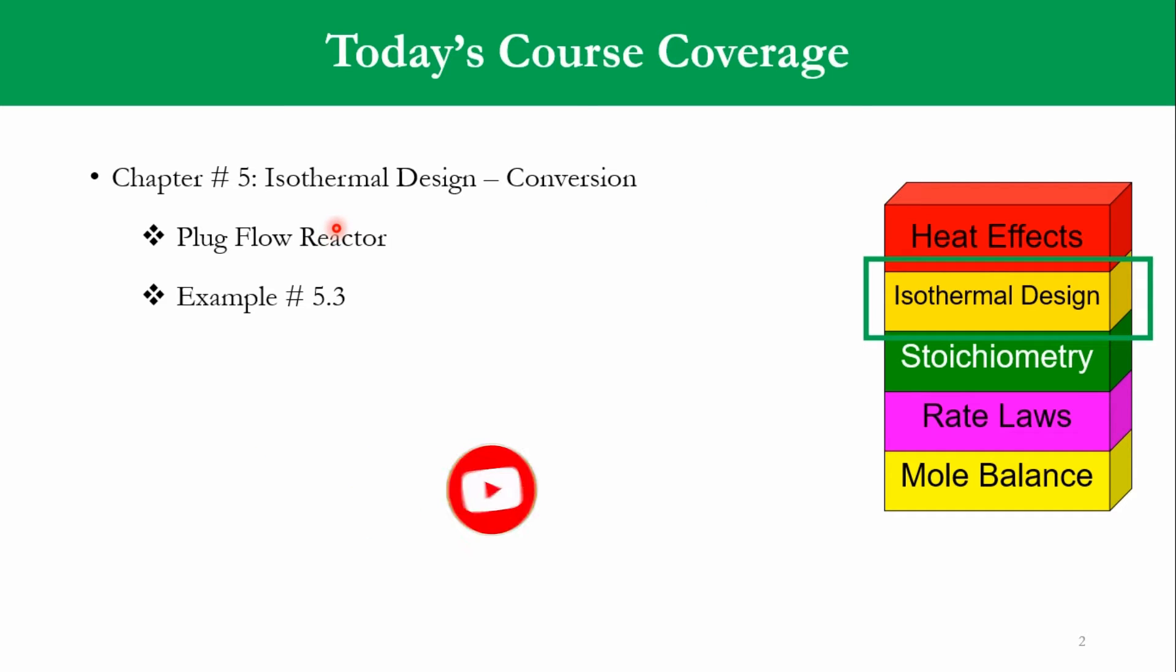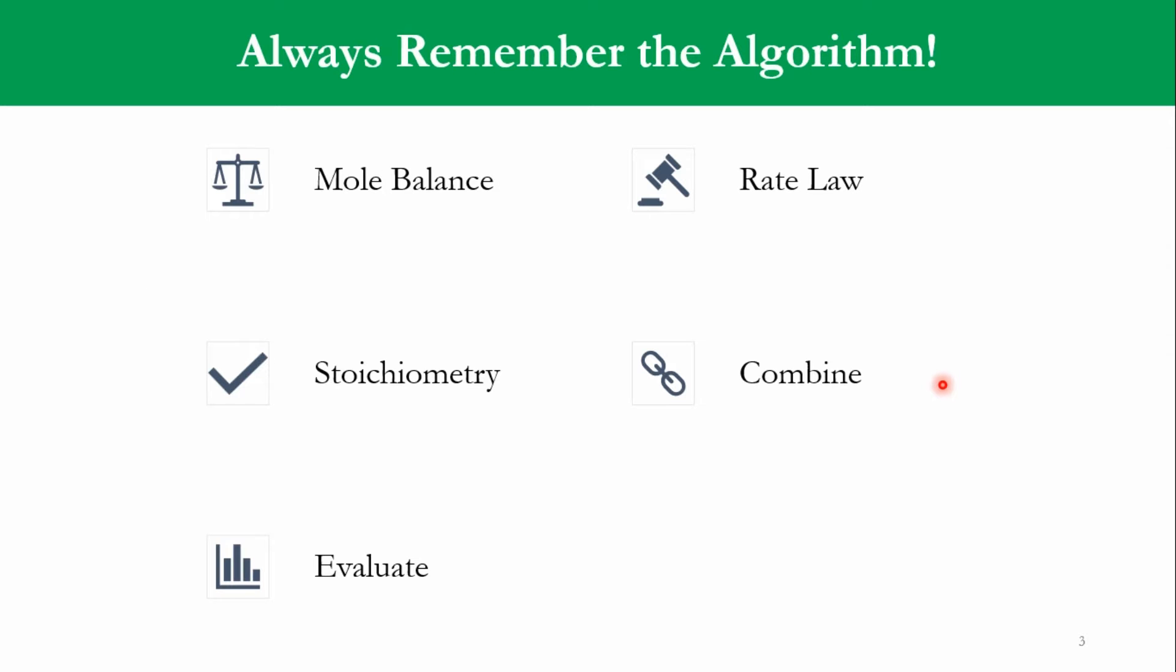In the last lecture, we derived various equations for the plug flow reactor for liquid phase and gas phase systems. Now we will solve example number 5.3 related to the plug flow reactor. But before starting, always remember the algorithm: first step is mole balance or design equation, second step is rate law, third step is stoichiometry. Then we combine these three and finally the evaluation.